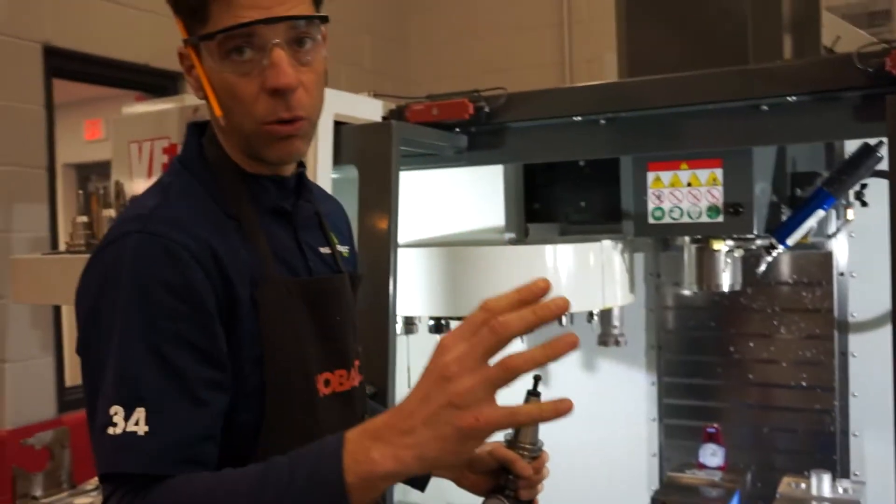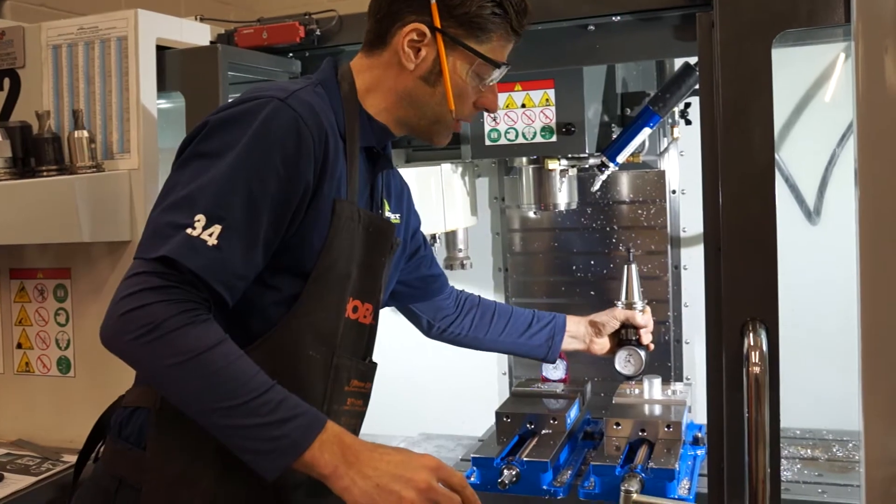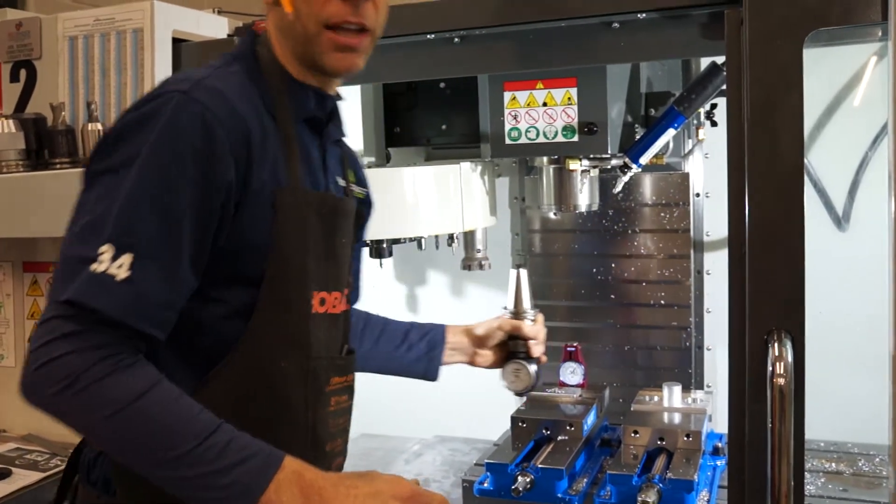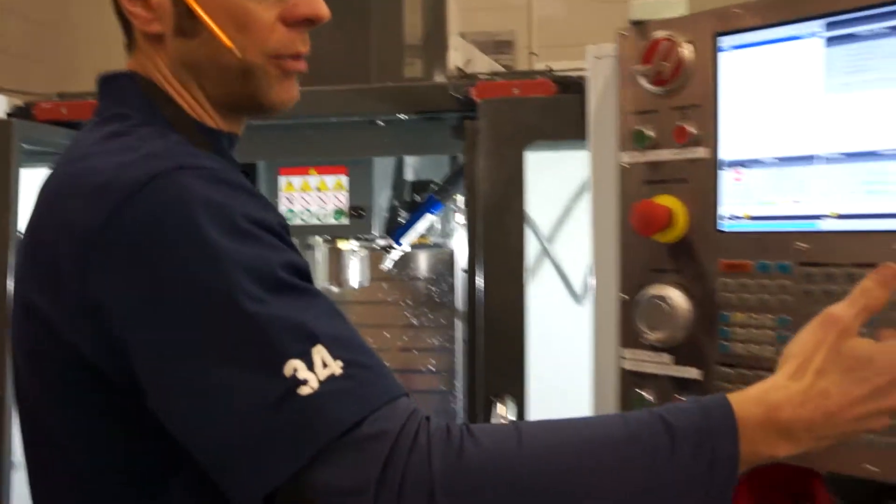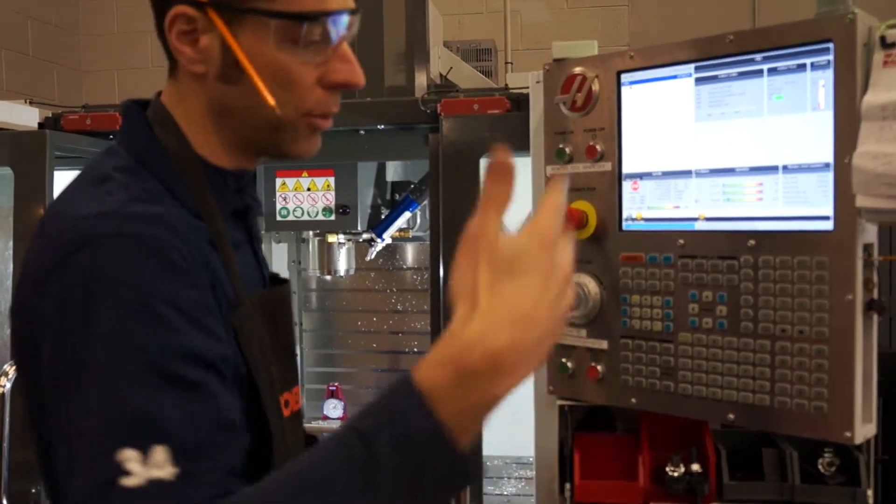From there, we're going to zero the operator setting, and then from there we can transfer wherever we want and grab a height and come up with whatever G154 we want. P1, P2, P5, all the way through P50.